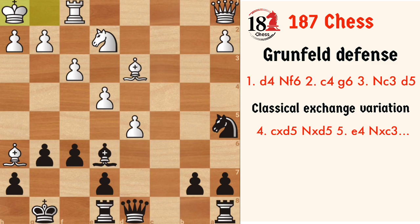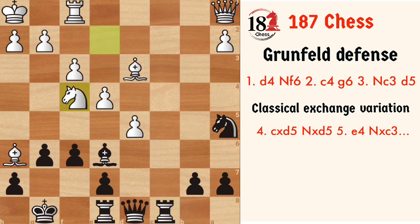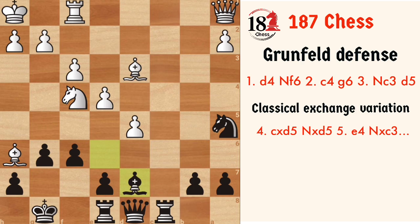Still the bishop cannot be taken, so white plays Rc1. Now white has a good move, which is Nf4, attacking the bishop and simultaneously defending the bishop on d3. So black will have to play Bd7 — not Bf7, because it will be inactive there. So Bd7 is the good move.